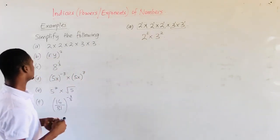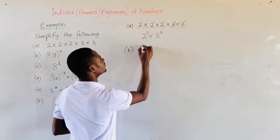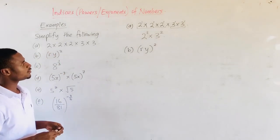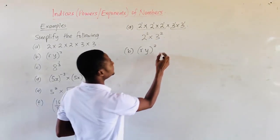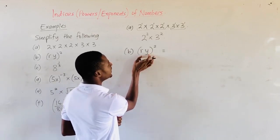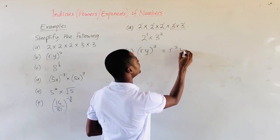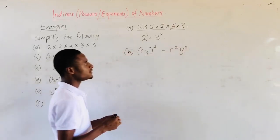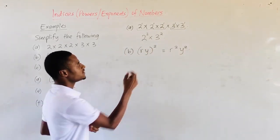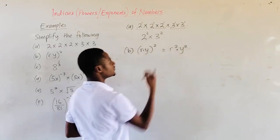Let's go to the second example B, which also uses one of the laws. If we have 2 numbers multiplying and they share a common power, then that is equal to raising each number to that power and multiplying. So R times Y all raised to the power 2 gives us R squared times Y squared.